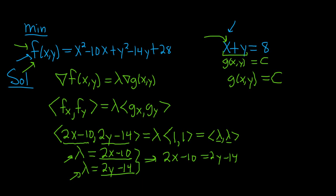At this point, maybe add 10 to both sides: 2x = 2y - 14 + 10, so 2x = 2y - 4. Now divide by 2, so x = y - 2.